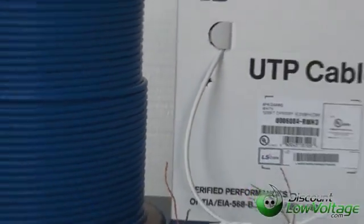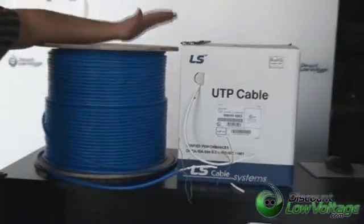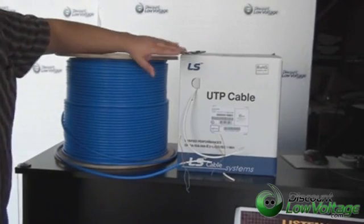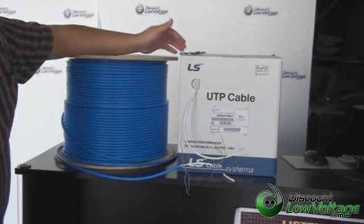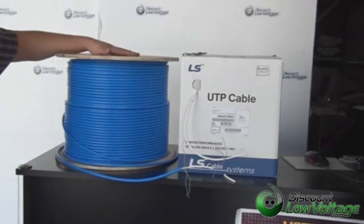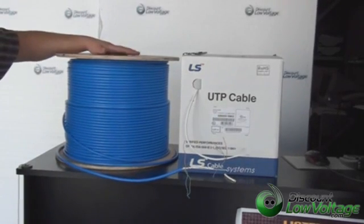Now another difference between these cables is the weight. The Category 6 cable is typically about 33 pounds per thousand feet. Category 6A, this spool right here, is 53 pounds per thousand feet.